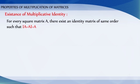Existence of multiplicative identity: For every square matrix A, there exists an identity matrix of same order such that IA = AI = A.